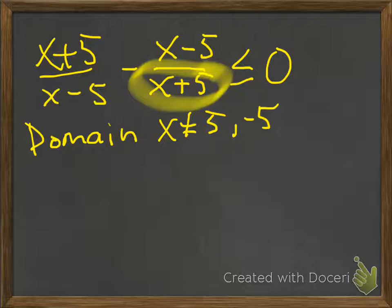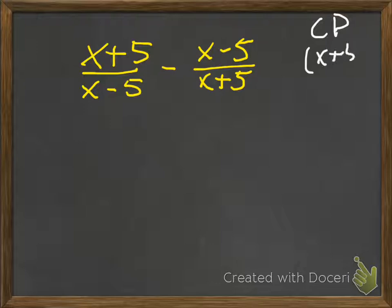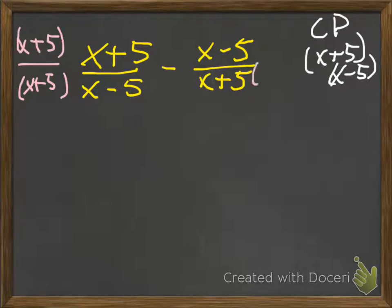Next, we want to get one fraction. If we're going to get one fraction, we need to get a common denominator. The common denominator of all my denominators is x plus 5 times x minus 5. I need to multiply the first fraction by x plus 5 — I can't do the denominator without also doing the numerator. And on the second fraction, that's an x minus 5, to complete my common denominator.